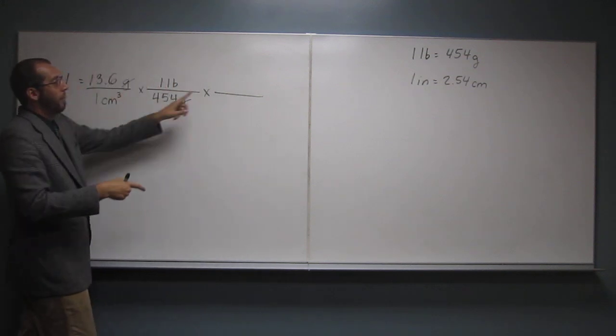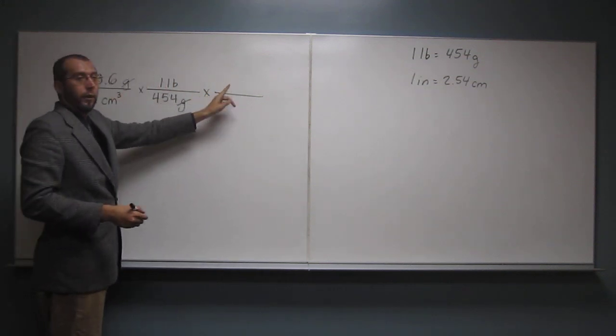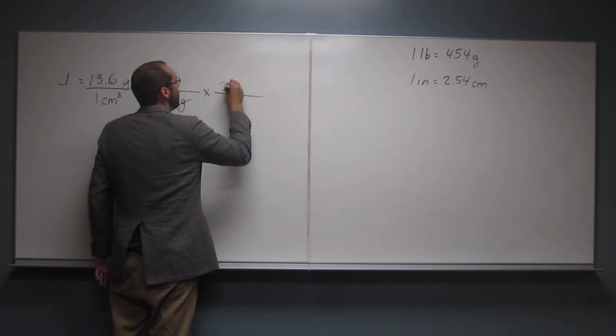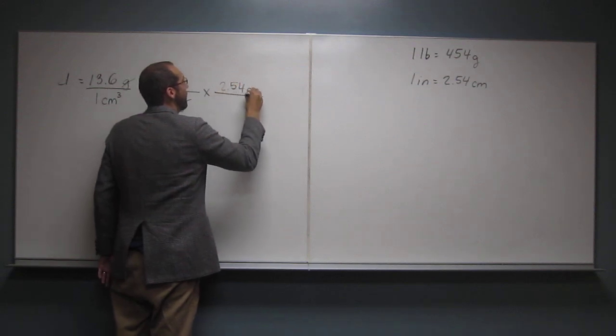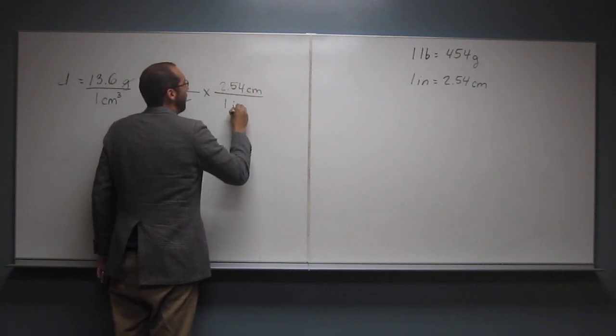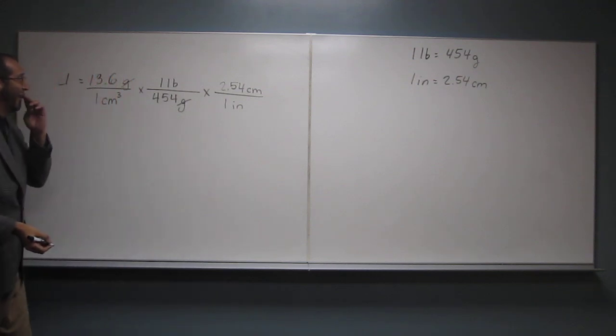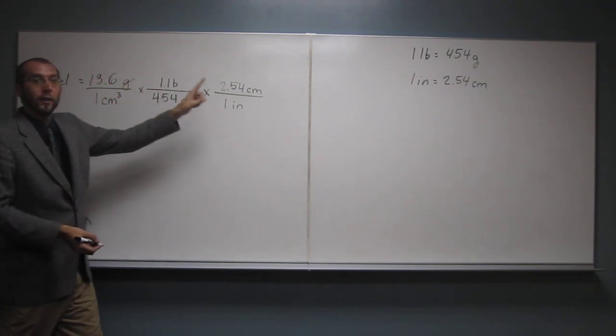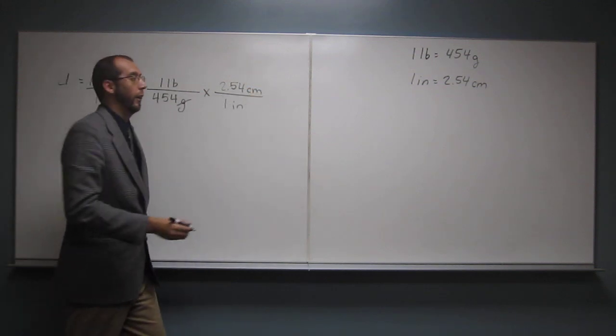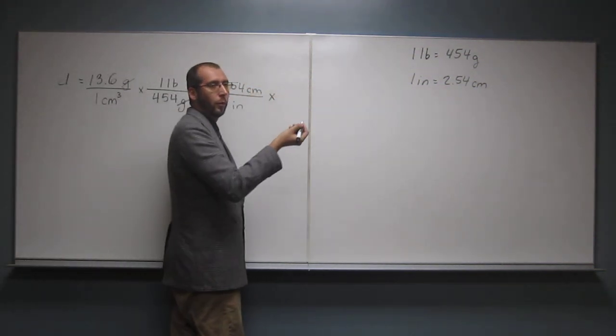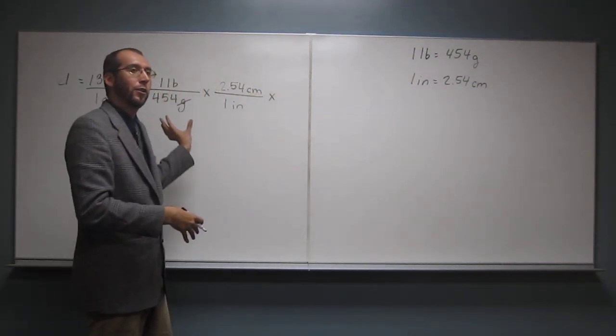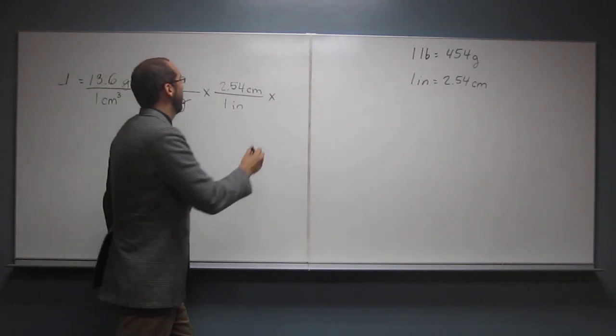So on the top, we want centimeters because we want to get rid of them, right? So 2.54 centimeters, one inch, okay? That doesn't get rid of centimeters three times, right? So we're going to have to do that two more times. That's what I'm saying. Or cubed. Or cubed, right? But like I said, I wanted to do this one all the way out so people would see it, okay?